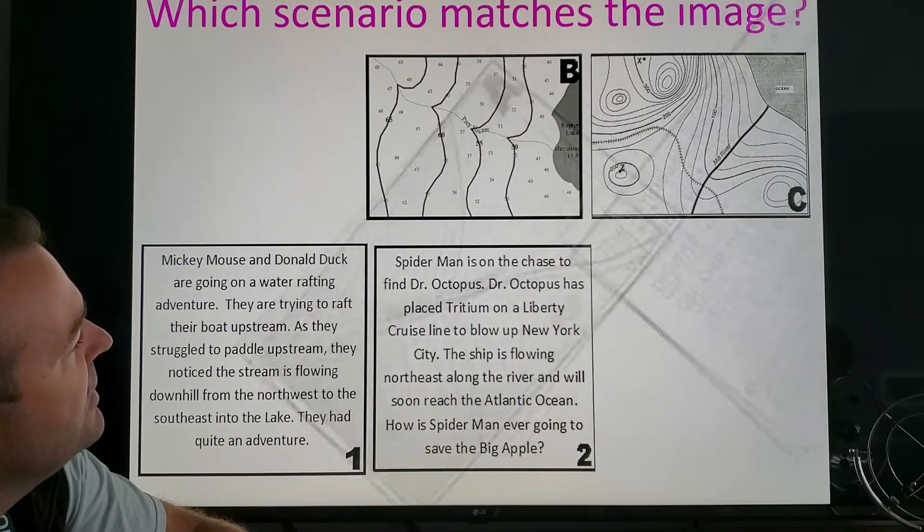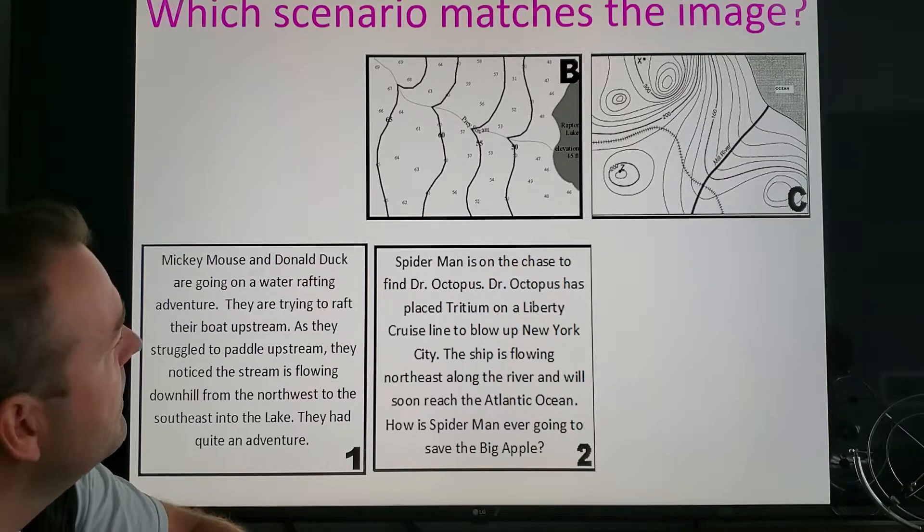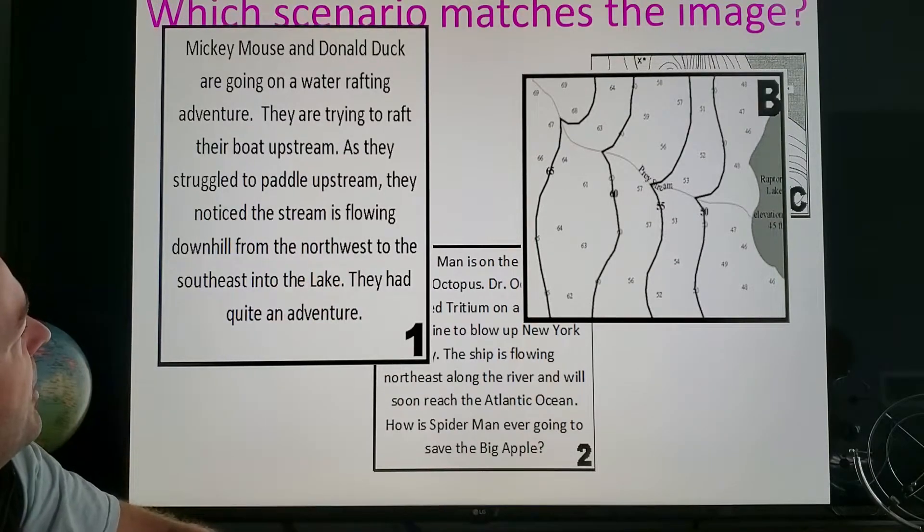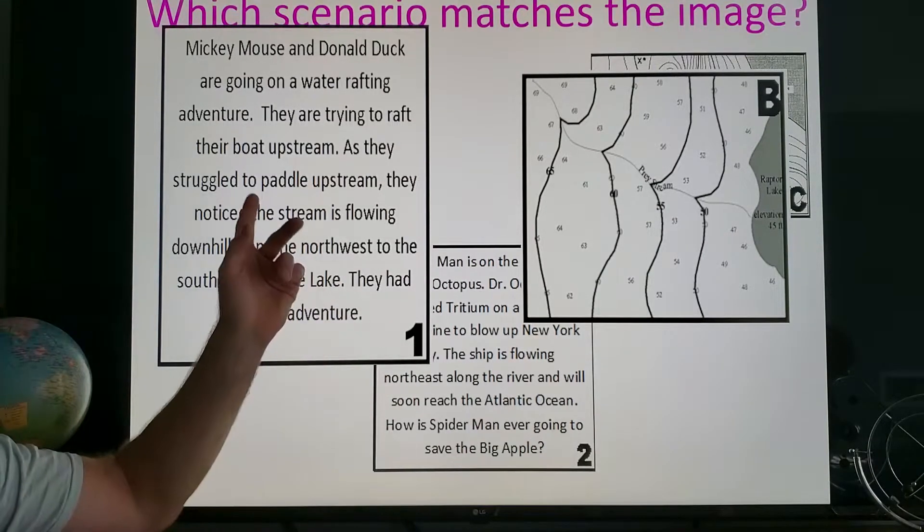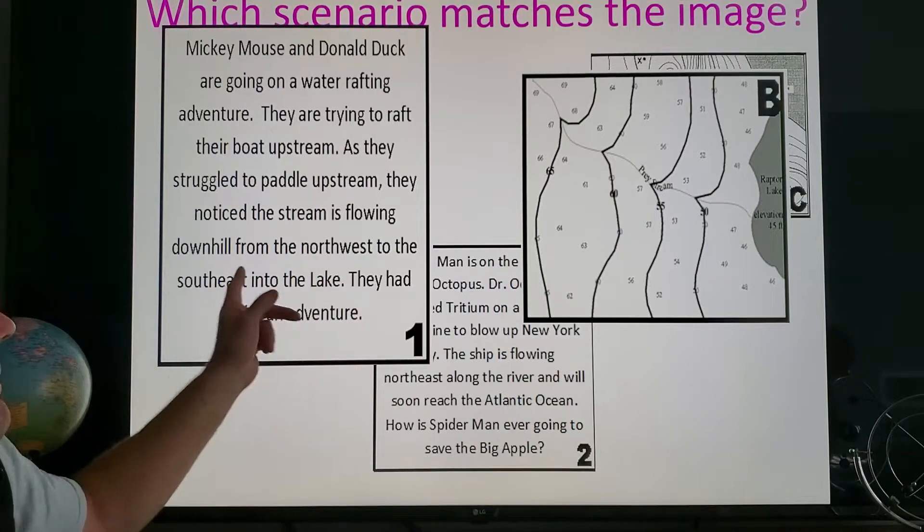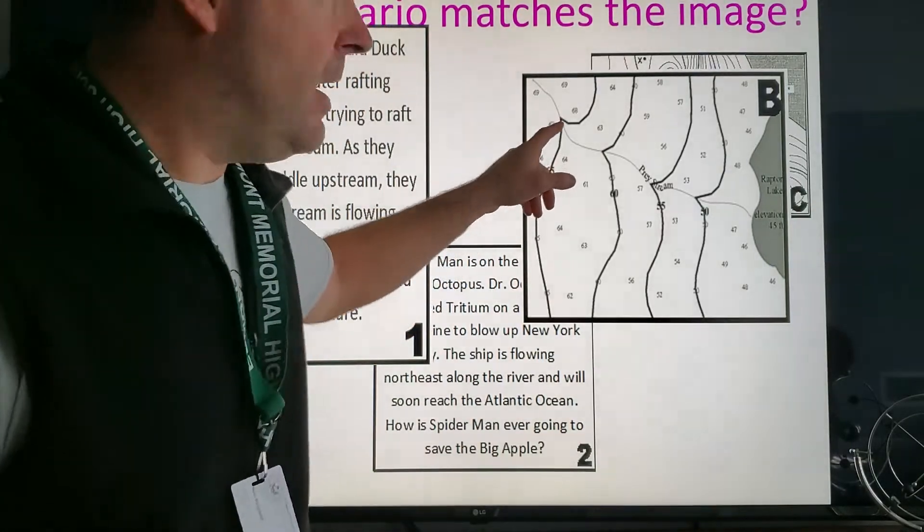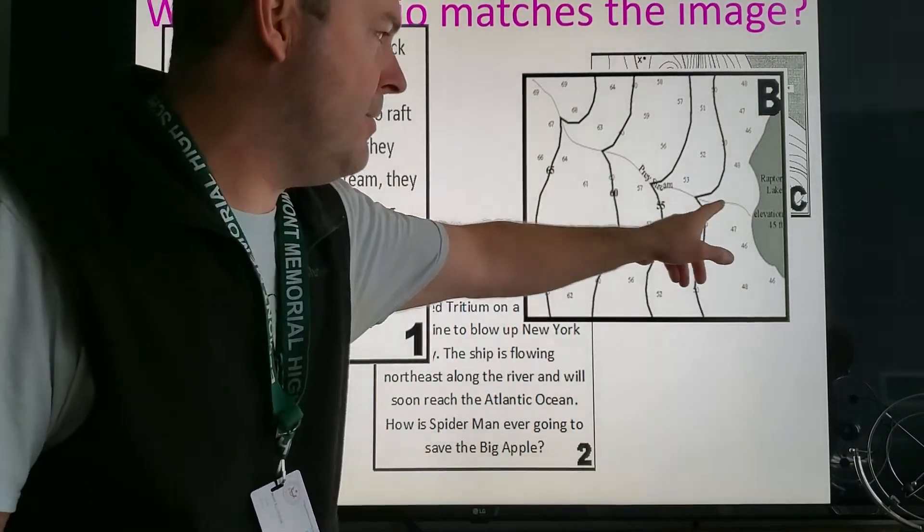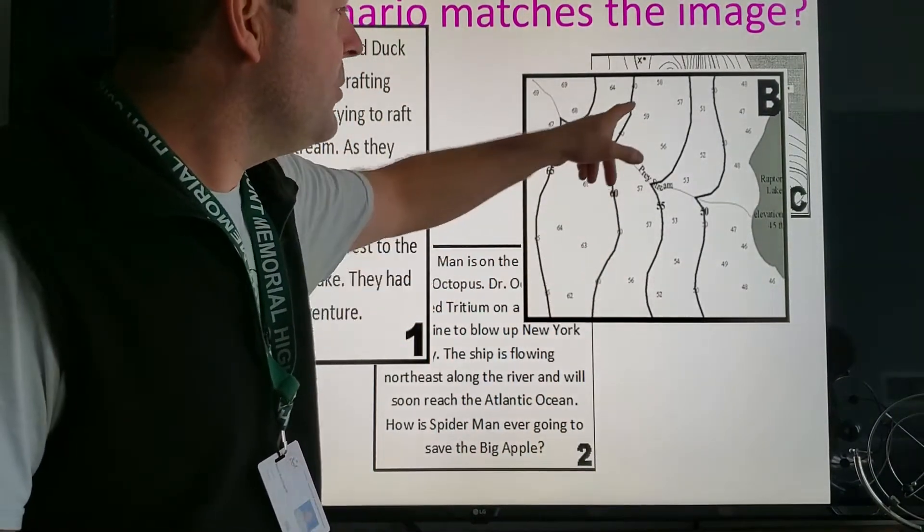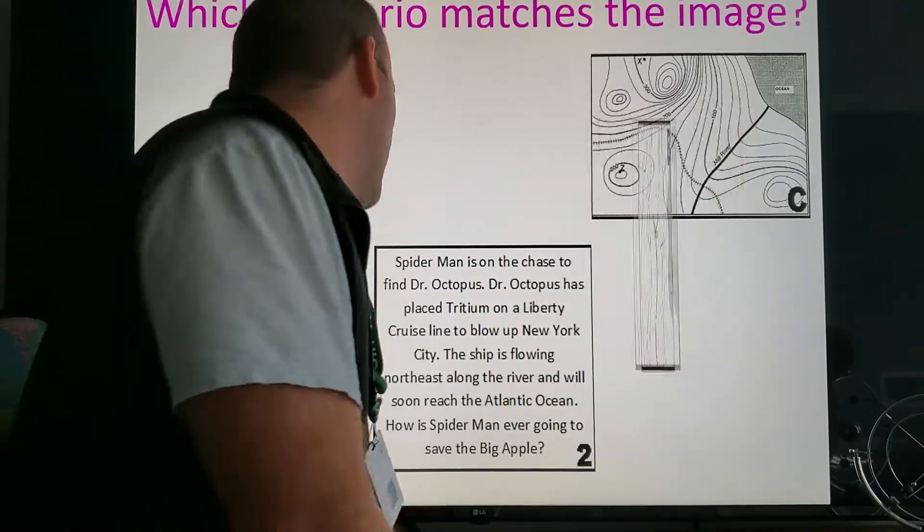With that in mind let's see if you can figure these two out. Pause it if you need to. Hopefully you matched these two up right here folks. Mickey Mouse and Donald Duck are going on a whitewater rafting adventure trying to raft their boat upstream. As they struggle to paddle upstream they notice the stream is flowing down from northwest to southeast. Take a look—higher numbers mean higher elevation, water likes to flow downhill, and that of course is to the southeast in this case. Plus as the contour lines cross a river they point uphill and the river goes the opposite way.